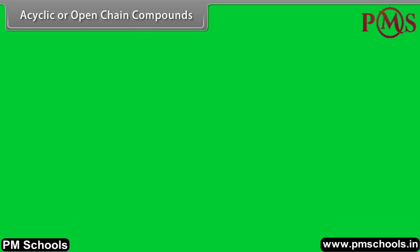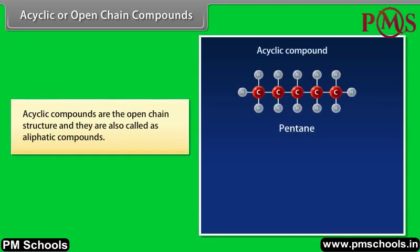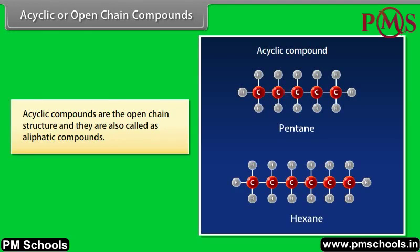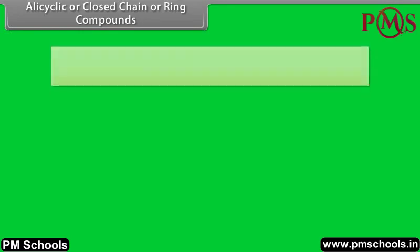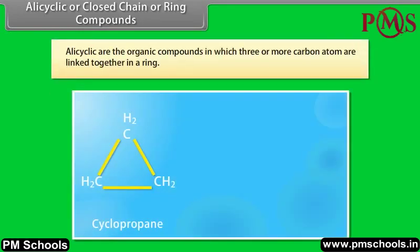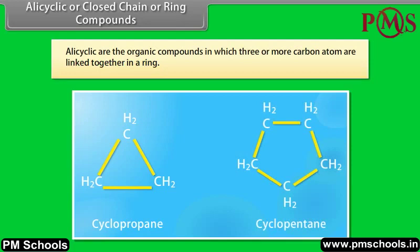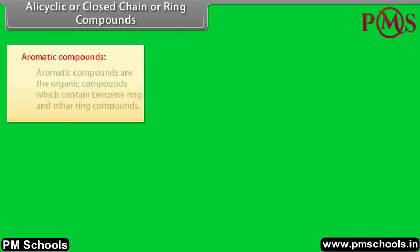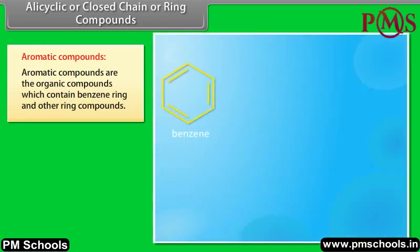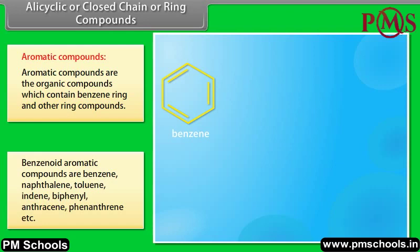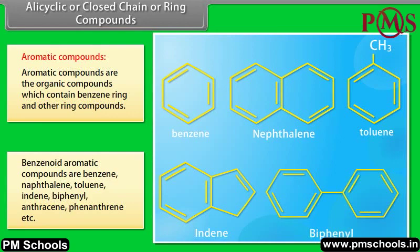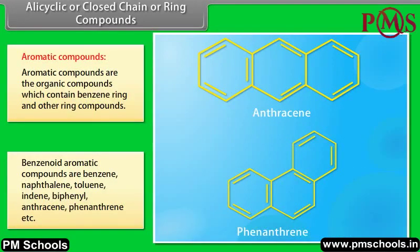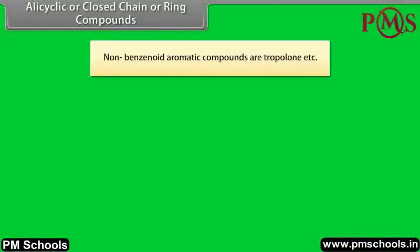Acyclic or open-chain compounds are the open-chain structures and are also called aliphatic compounds. Alicyclic or closed-chain compounds are organic compounds in which three or more carbon atoms are linked together in a ring. Aromatic compounds are organic compounds which contain a benzene ring. Benzenoid aromatic compounds include benzene, naphthalene, toluene, indene, biphenyl, anthracene, phenanthrene, etc. Non-benzenoid aromatic compounds include tropone, etc.